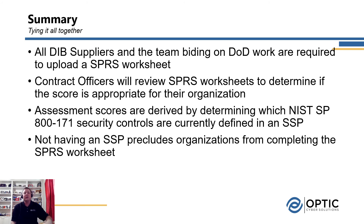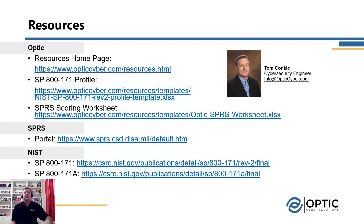In summary, we now know that the interim rule change is what has led to the SPRS worksheet being important — requiring DoD contractors, both primes and subs, to upload a completed SPRS worksheet to the SPRS portal, where the contracting officer will use it to determine if the cybersecurity capabilities of the respondents meet their expectations for securing the data required in performance of that contract. The assessment score is determined based on your implementation status of the 110 SP 800-171 controls as defined in your organization's SSP, so if you don't have an SSP, you won't be able to score your system — and that's the first place to start.